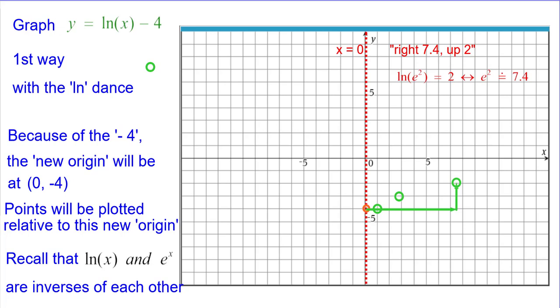Right 7.4 up 2. The natural log of e squared is 2 and remember that e squared is about 7.4.